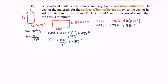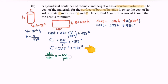This is step one. We extract the information and rewrite: C = 2V·r⁻¹ + 4πr². Step two: differentiate the cost with respect to r. We get dC/dr = -2V/r² + 8πr, which can be rewritten as dC/dr = -2V·r⁻² + 8πr.